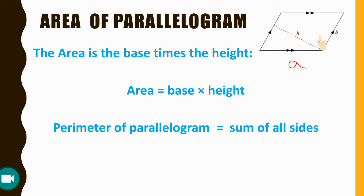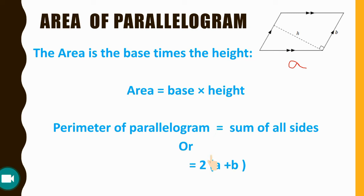Since opposite sides are equal and parallel, if side A is 8 cm then the opposite side is also 8 cm. So we can say that the perimeter equals A plus B multiplied by 2. In other words: 2 times A plus 2 times B equals the perimeter, or equivalently 2 into (A plus B) is the perimeter of the parallelogram.